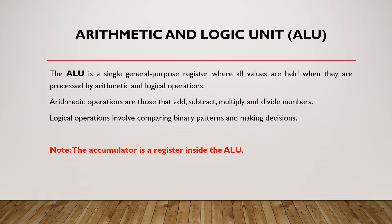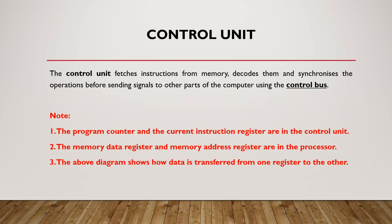Arithmetic operations are those that add, subtract, multiply, and divide numbers. Logical operations involve comparing binary patterns and making decisions. It should be noted that the Accumulator is a register inside the ALU. The Control Unit fetches instructions from memory, decodes them, and synchronizes operations before sending signals to other parts of the computer using the control bus. The Program Counter and the Current Instruction Register are in the Control Unit, while the Memory Data Register and Memory Address Register are in the processor.